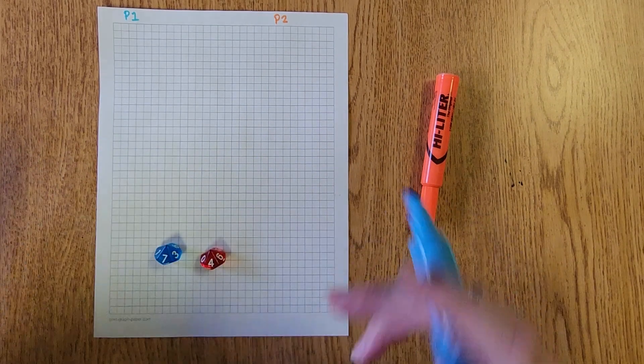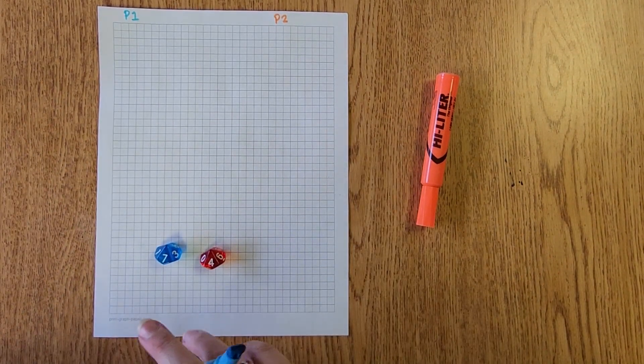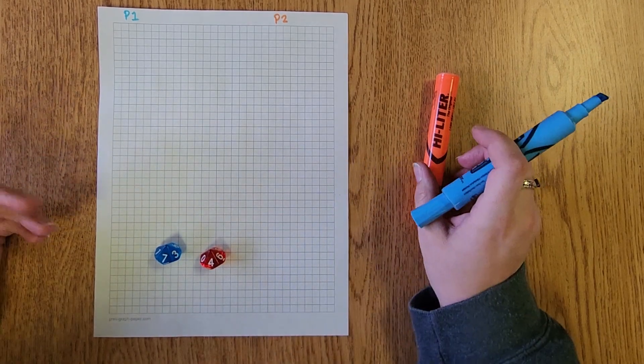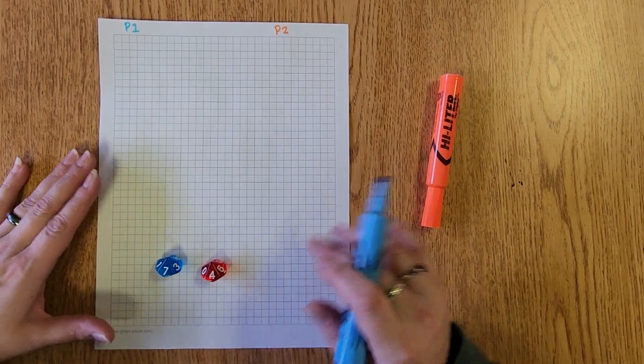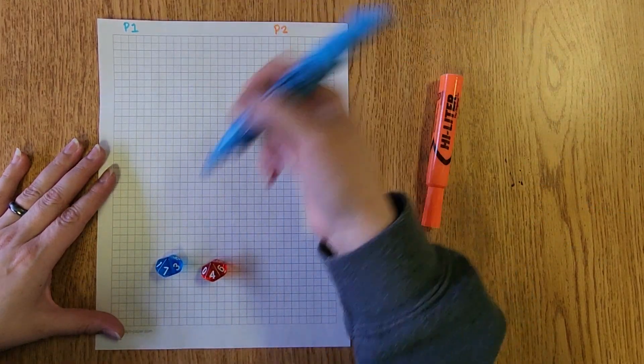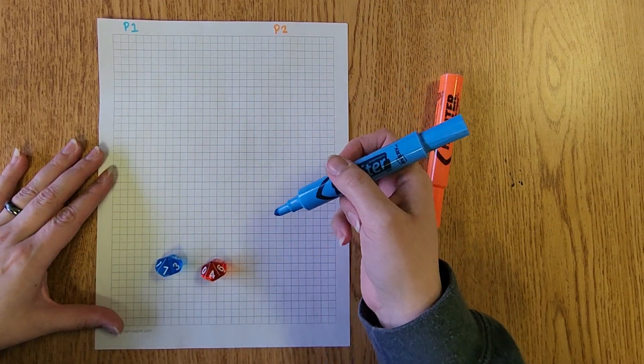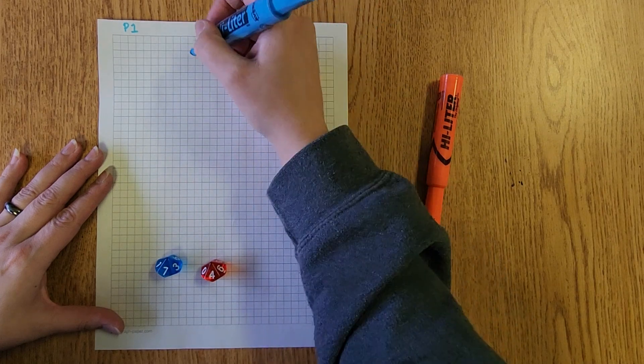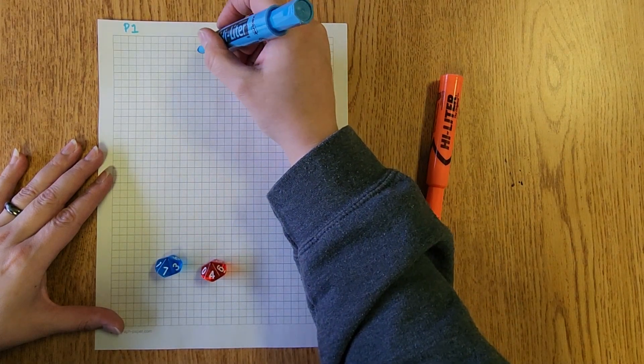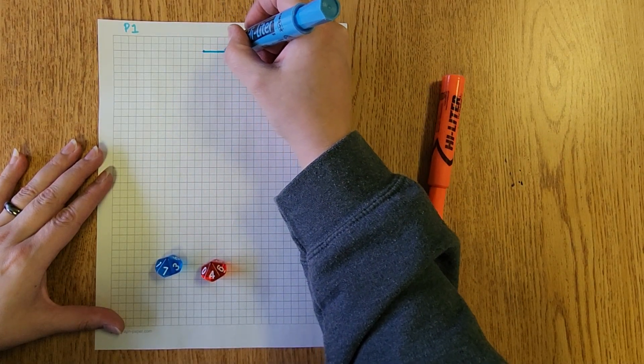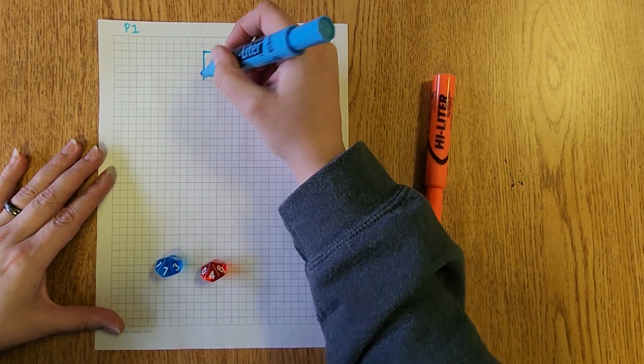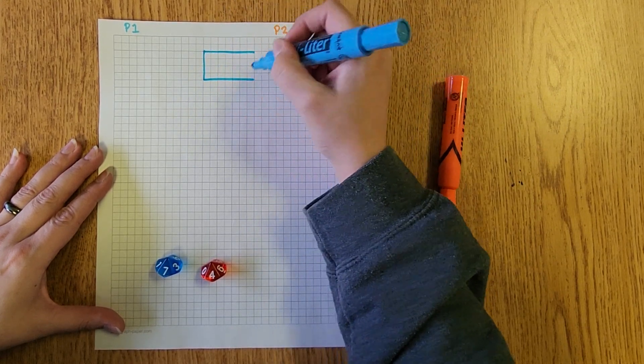This player would pick a location on the grid. Anywhere they would like to take up the space. Sometimes later in the game you may want to strategize about where the location might be. So they're going to make a box that is seven by four. We're going to count one two three four five six seven squares by four squares.